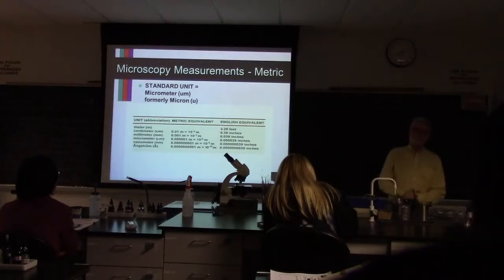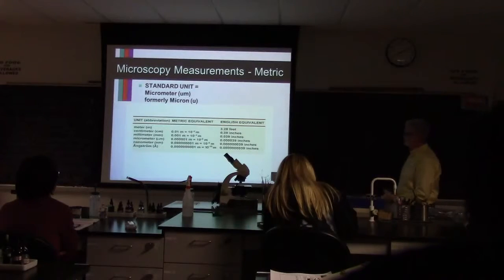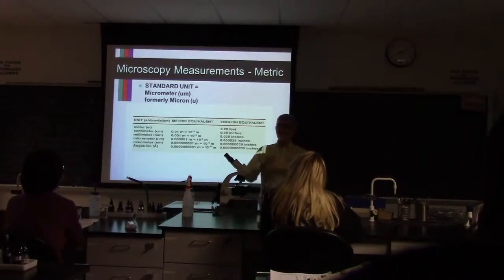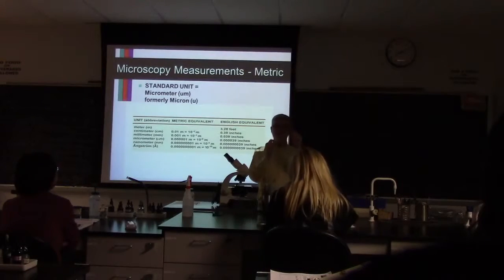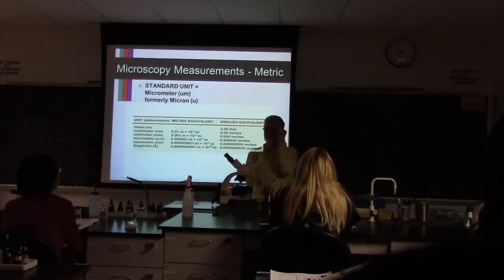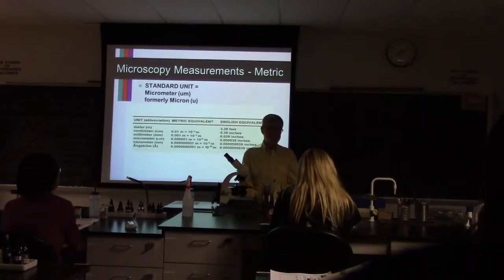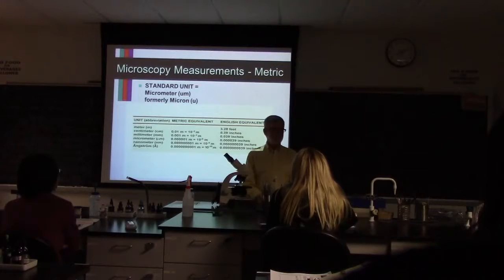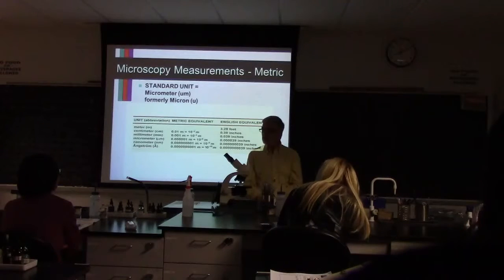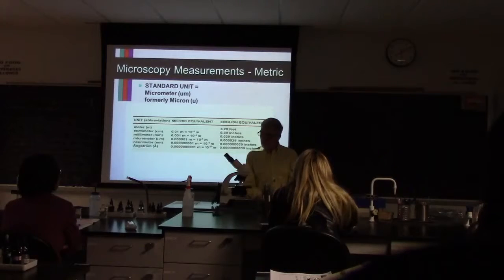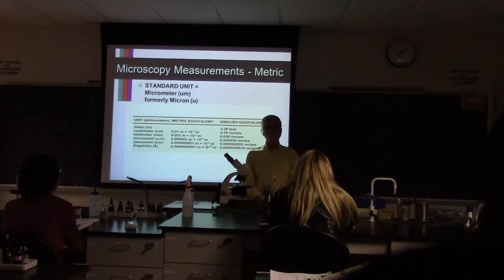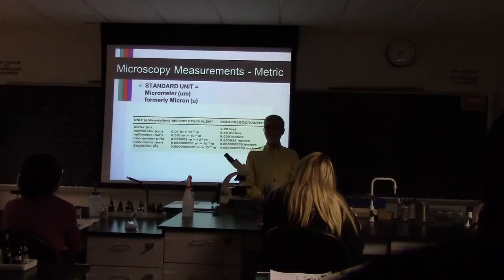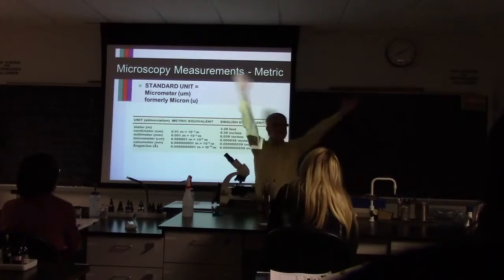They measured E. coli and it's 10 to the minus 6th, or a millionth of a meter long, by 0.5 times 10 to the 6th, or a half of a millionth wide. Someone said: if it's 10 to the minus 6th long and half that wide, we need a standard measurement for what 1 times 10 to the minus 6 is. Someone said we need to name it, and it has to sound small. So why don't we call it a micron?